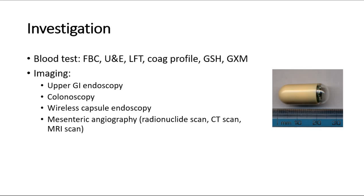For investigation, blood tests are ordered as part of the routine assessment for GI bleeding, including a full blood count, urea and electrolytes, liver function test, and coagulation profile. Depending on the clinical picture, a group and save or cross-match may be warranted if there is a potential need for transfusion.